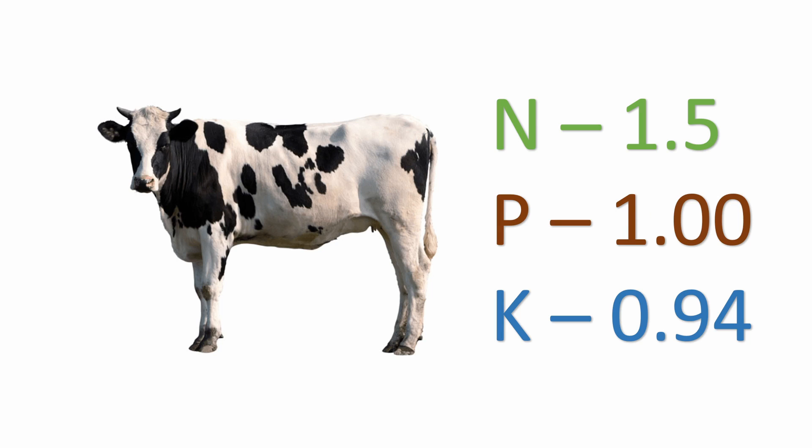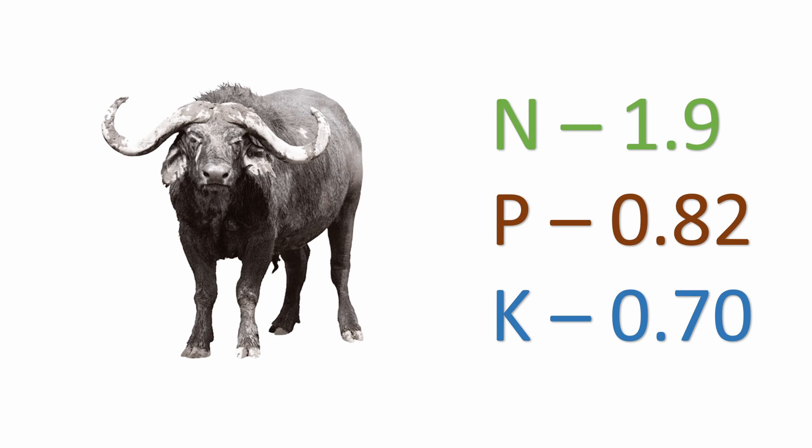So for cow and cattle, it has a balanced components of NPK. So you have here nitrogen 1.5 and P is 1 and K is 0.94. For water buffalo or carabao, you have here a high source of nitrogen at 1.9 and slightly low P and K.